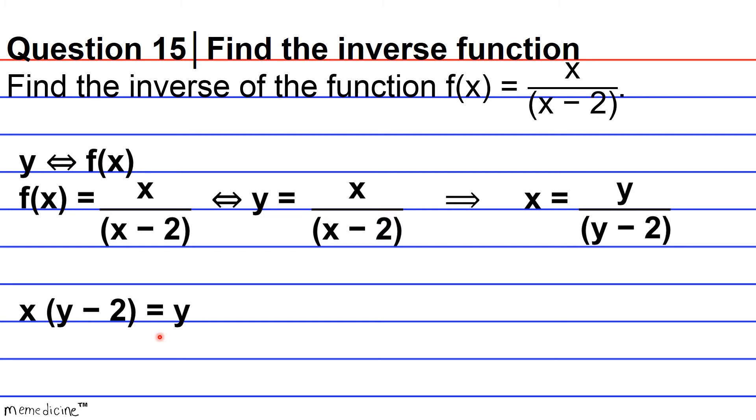And basically what we're going to do is distribute the x. And when we do that, we get that x times y minus 2x is equivalent to y.